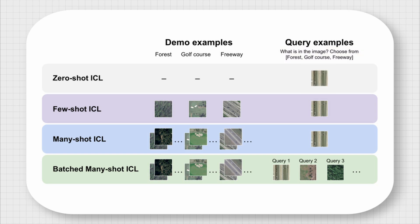In zero-shot, no examples of these are provided. In few-shot ICL, only one or a few examples are given. In many-shot ICL, a large number of examples are provided, whereas the most advanced setting — batched many-shot ICL — can perform multiple queries using multiple references or examples.